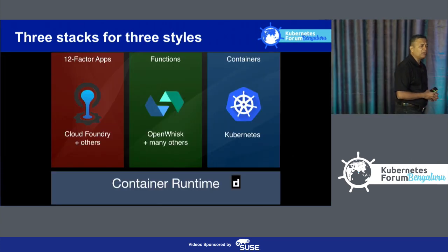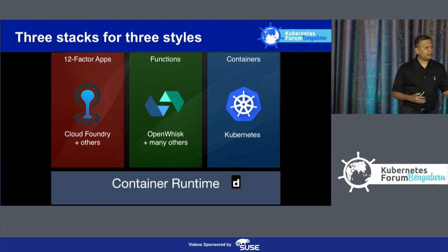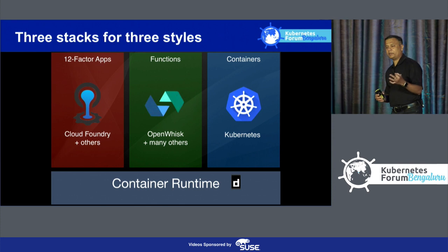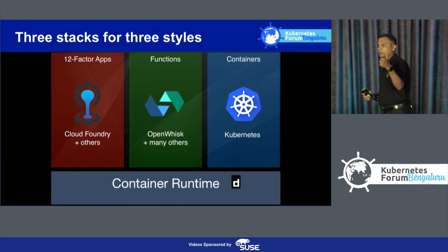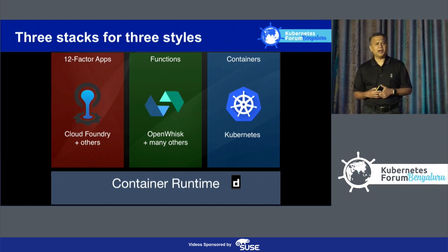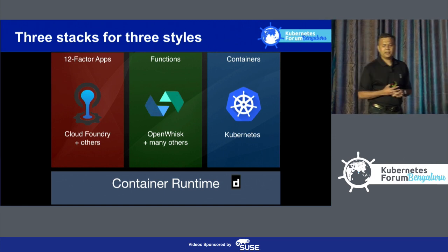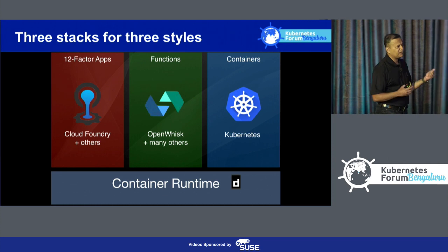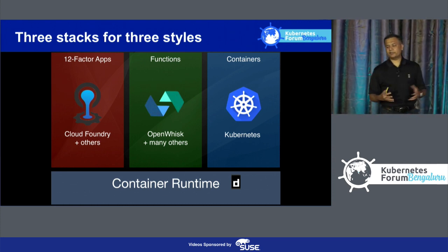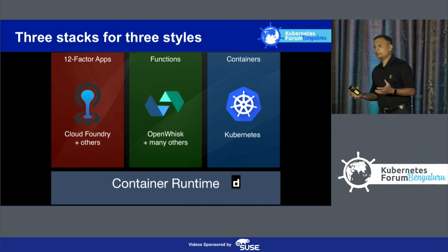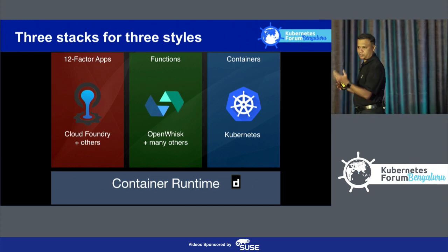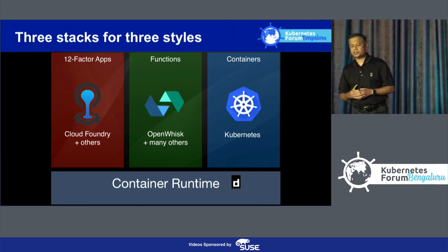In the cloud-native world, we see essentially these three styles or three programming styles. There's one which is 12-factor applications, which is primarily driven by Cloud Foundry, the project in CNCF. Then there are cloud functions from IBM, Azure Functions from Microsoft, and Lambda — these are serverless applications. And the last one is about containerizing and deploying container-based applications, on top of Kubernetes.